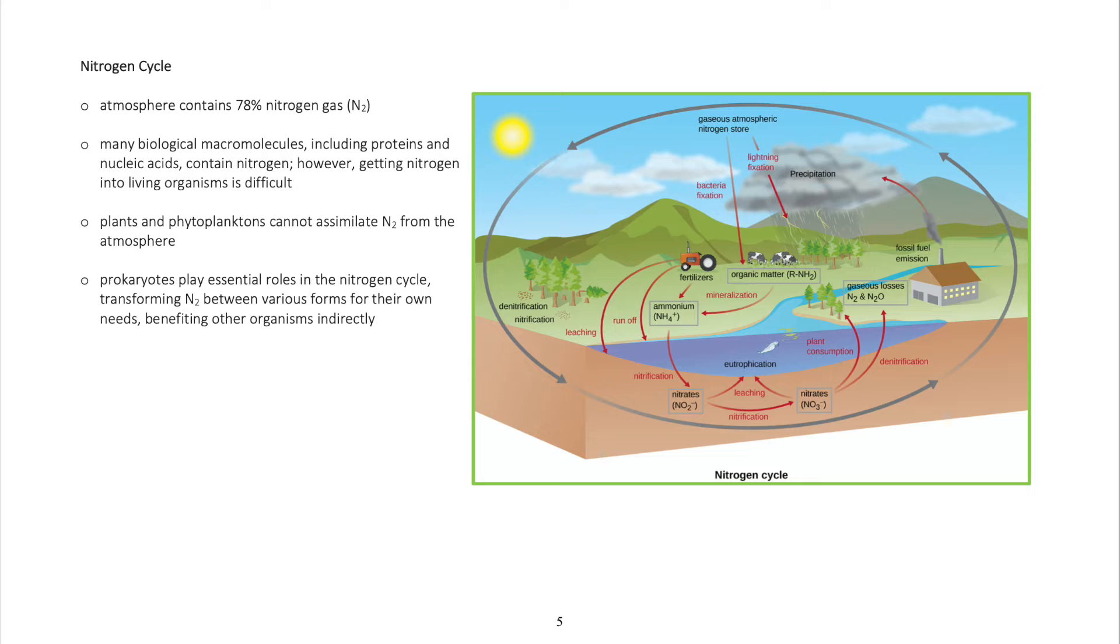Plants and phytoplanktons cannot assimilate nitrogen from the atmosphere. Prokaryotes play essential roles in the nitrogen cycle, transforming nitrogen between various forms for their own needs, benefiting other organisms indirectly.